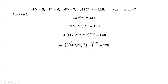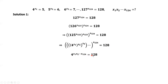From this equation, we simplify the left-hand side. We have 4 to the power of x1 times x2 times, until, times x124 equals 128.